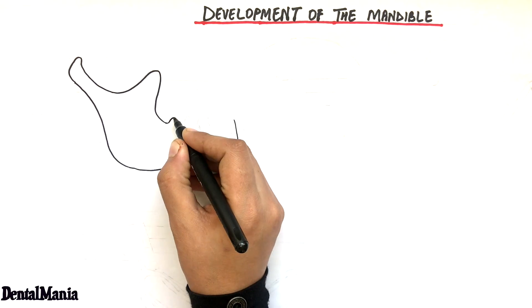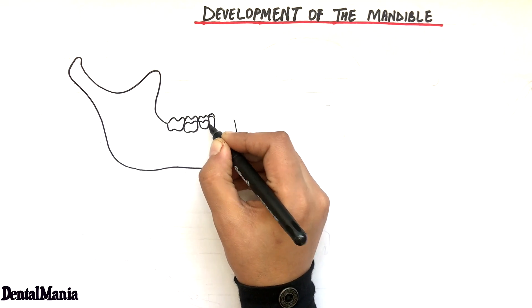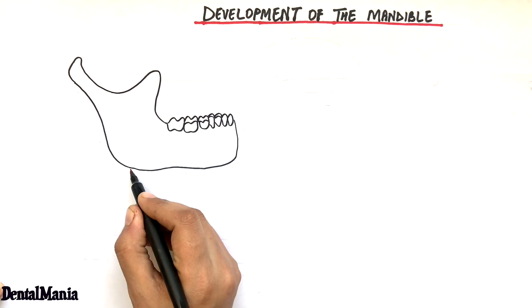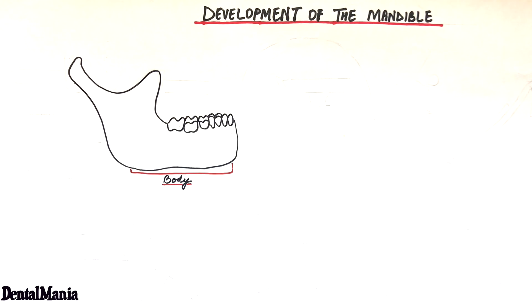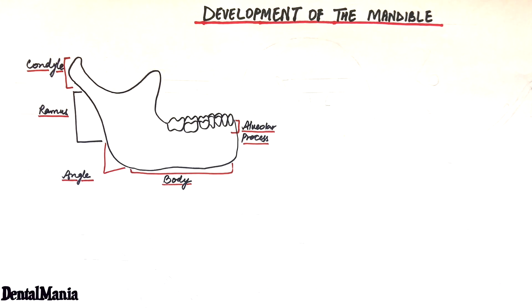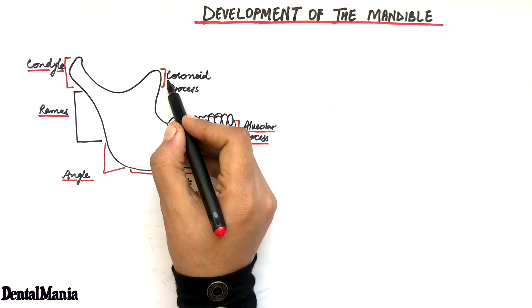Mandible is considered the strongest bone of the facial skeleton. Its main anatomic parts are the body, the angle which unites the ramus of the mandible to its body, the alveolar process which accommodates the teeth, a condylar process which makes the TMJ along with the temporal bone, and a coronoid process.